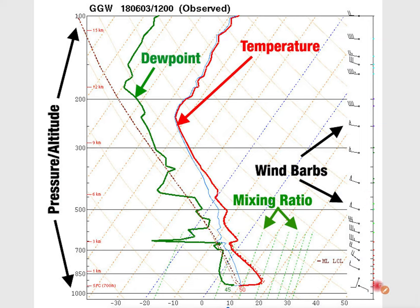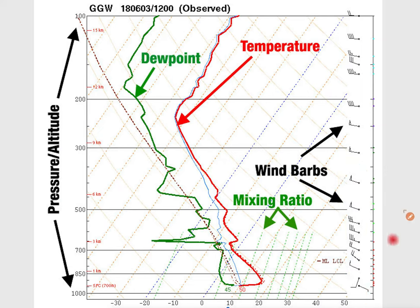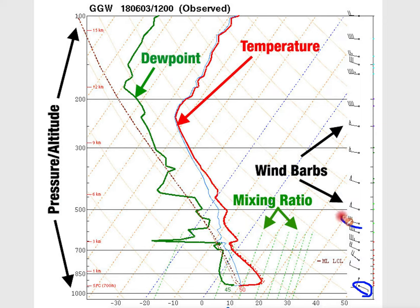These are wind barbs here on the right side. Wind barbs basically show you the strength and direction that the wind is blowing as you go higher in the atmosphere. Down at the surface, the wind is really calm but coming out of the east-southeast. But as you go higher in the atmosphere, it kind of strengthens, as indicated by the three little lines there, and is coming out of the west-northwest — basically a complete 180-degree change.